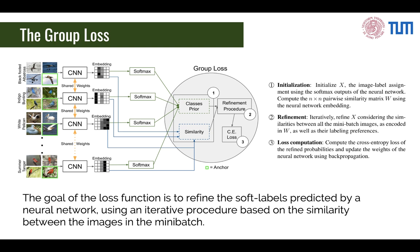The main goal of our loss function is to refine the prediction of the neural network based on an iterative procedure that considers the similarities between all the images in the mini-batch. Given a mini-batch consisting of images belonging to k different classes, a CNN first generates their embeddings and class priors. Then, from the embeddings, we build the similarity matrix of size n by n, where n is the number of images in the mini-batch. Based on the similarity matrix, we refine the class predictions in an iterative procedure. Finally, we compute the cross-entropy loss on every prediction and backpropagate the gradients on the CNN.